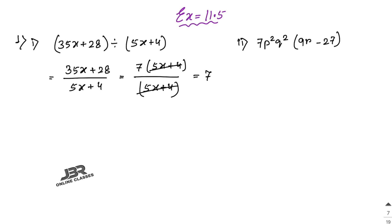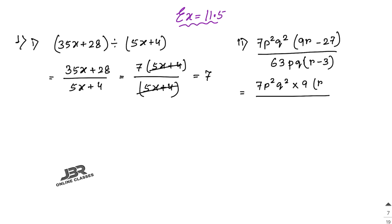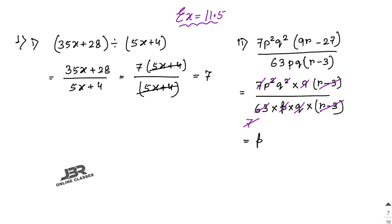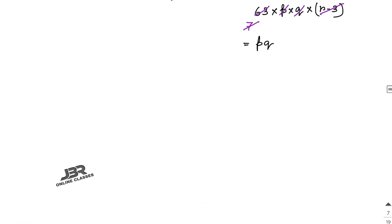Number 2: 27p²q² multiplied by (9r − 27) divided by 63pq(r − 3). In the numerator, factor out 9 from (9r − 27) to get 9(r − 3). Then 9 over 63 simplifies to 1 over 7, (r − 3) cancels, p cancels leaving p, and q cancels leaving q. So the final answer is pq.